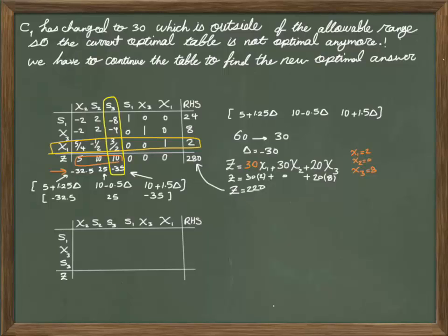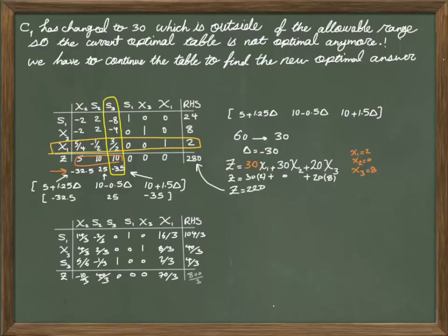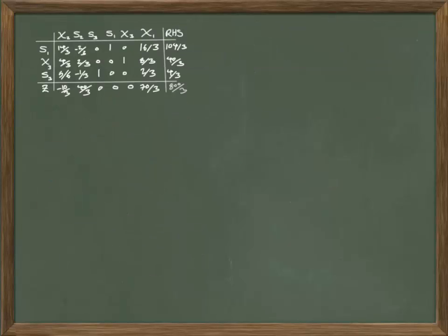If I do the iteration using elementary row operation, this is the new table that I get. Now in this table, still I have a negative term. So I have to continue the table. I take it to the next slide so you can see what happens.